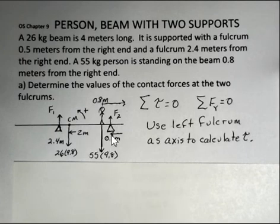I have the two supports labeled at 0.5 meters and 2.4 meters. There's a force F1 on the left, F2 from the support on the right. And our person, 55 kilograms, 0.8 meters from the right end. The center of mass is at the middle of this uniform beam, 2 meters, because the beam has a length of 4 meters.